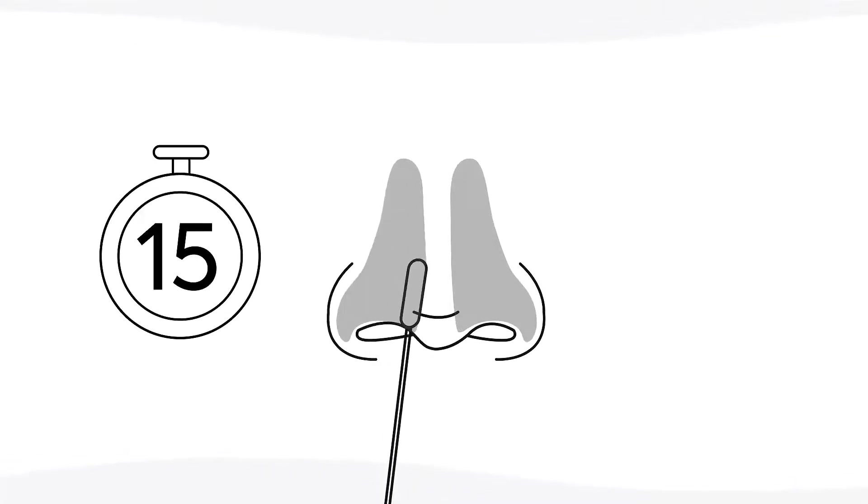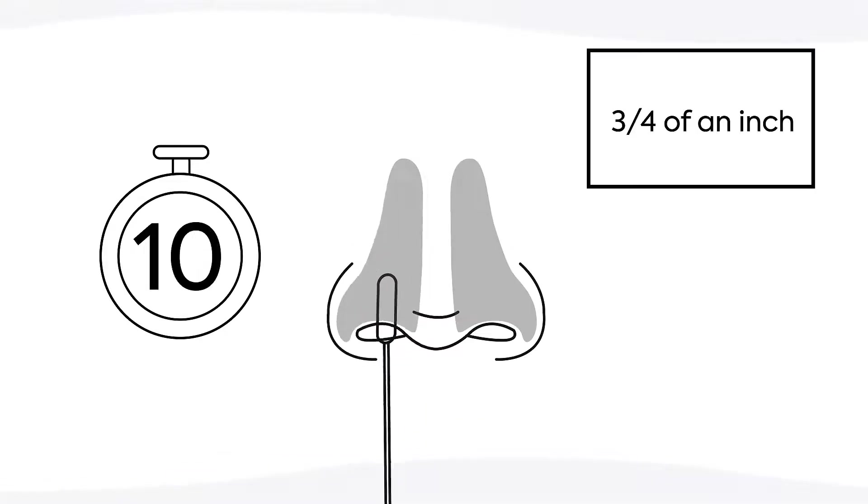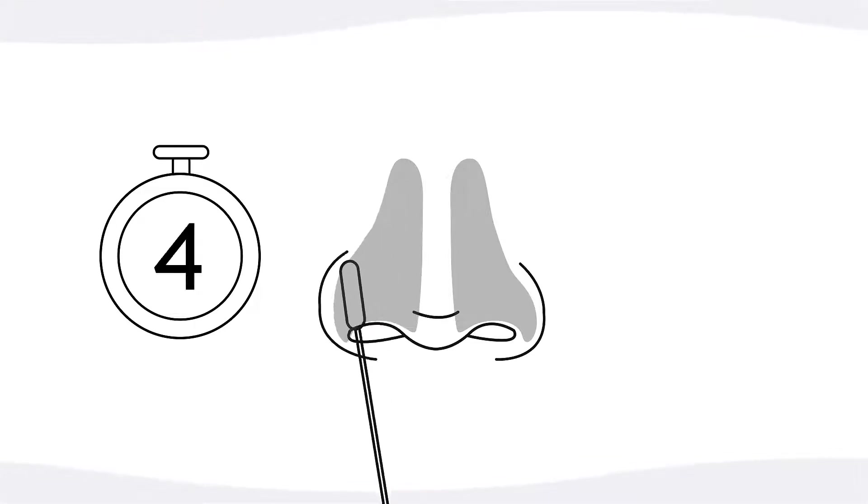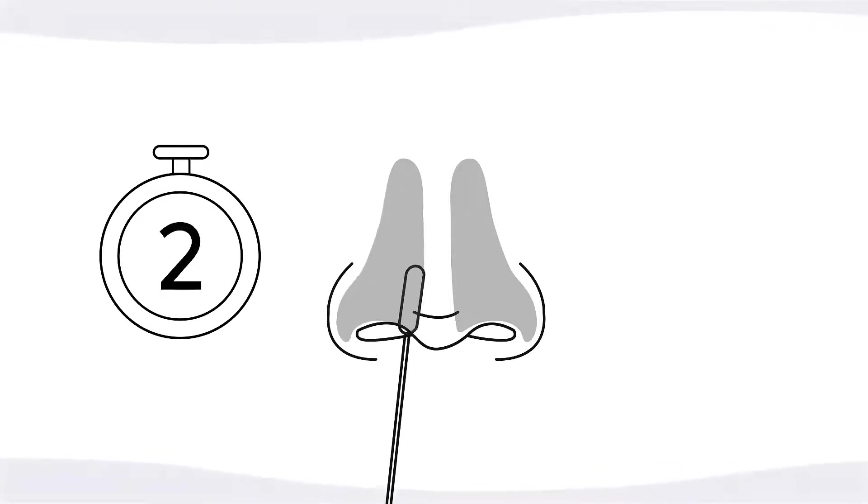Now gently remove the swab from the left nostril and repeat on your right nostril. Make sure you are using the same swab. With children, you must never insert the swab deeper than ¾ of an inch. If you want to start on your right nostril and then do your left, feel free, just make sure you do each nostril the same and don't leave any nostril behind. You're halfway there and doing a great job.